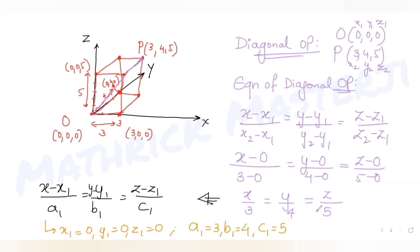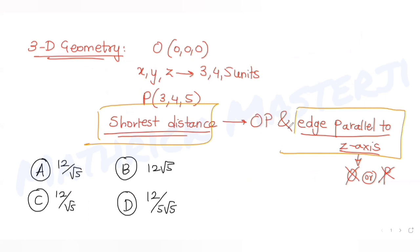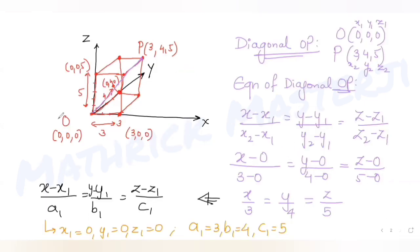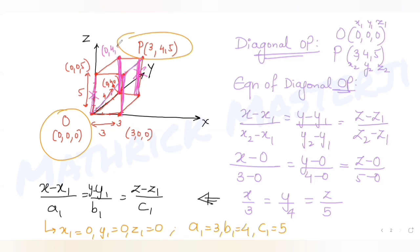Now let's find the equation of the other line — an edge parallel to the z-axis that does not pass through O or P. There are four edges parallel to the z-axis; two pass through O and P respectively, so I cannot use those. I'll take one of the remaining two edges, for example the edge with coordinates (0, 4, 0) and (0, 4, 5).